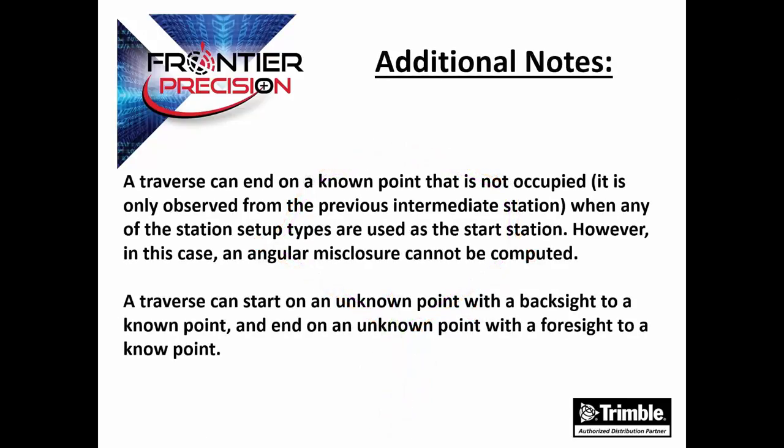Some additional notes to consider for traverse adjustments: a traverse can end on a known point that is not occupied — it is only observed from the previous intermediate station when any of the station setup types are used as the start station. However, in this case, an angular misclosure cannot be computed.